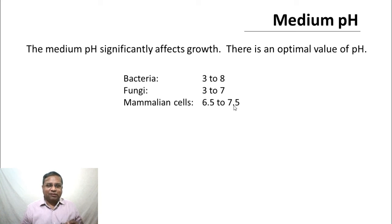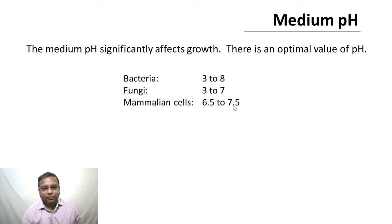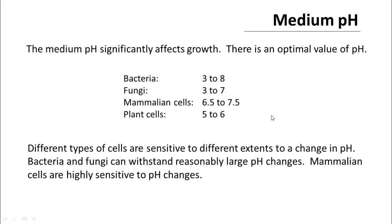The medium has special dyes added to it, such as phenol red, that indicate pH by their color. If the medium turns pink, the pH has become too high and cells may be dead; if it turns orange due to acid formation, the pH has dropped below about 6.8. Phenol red is normally added to many mammalian cell media such as DMEM to give a visual indication of pH. Plant cells require pH between 5 and 6. Different cell types are sensitive to pH changes to different extents — bacteria and fungi can withstand reasonably large changes, while mammalian cells are highly sensitive.